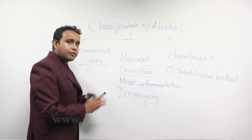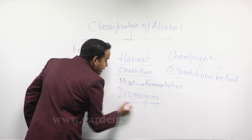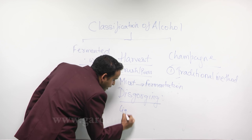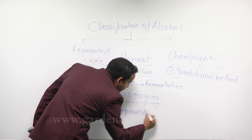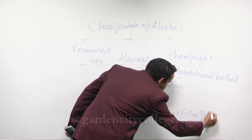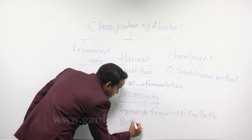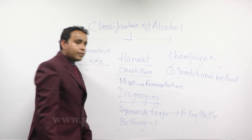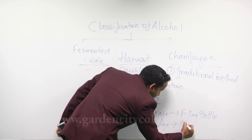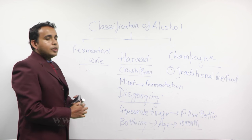After disgorging, the bottle needs to be filled to the brim. They add some wine plus sugar to give taste — this is called liqueur de tirage — and then they re-cork the wine and sell it. In the bottling process, aging is done for at least 10 months in the bottle. This is the whole process of making champagne using the traditional method.